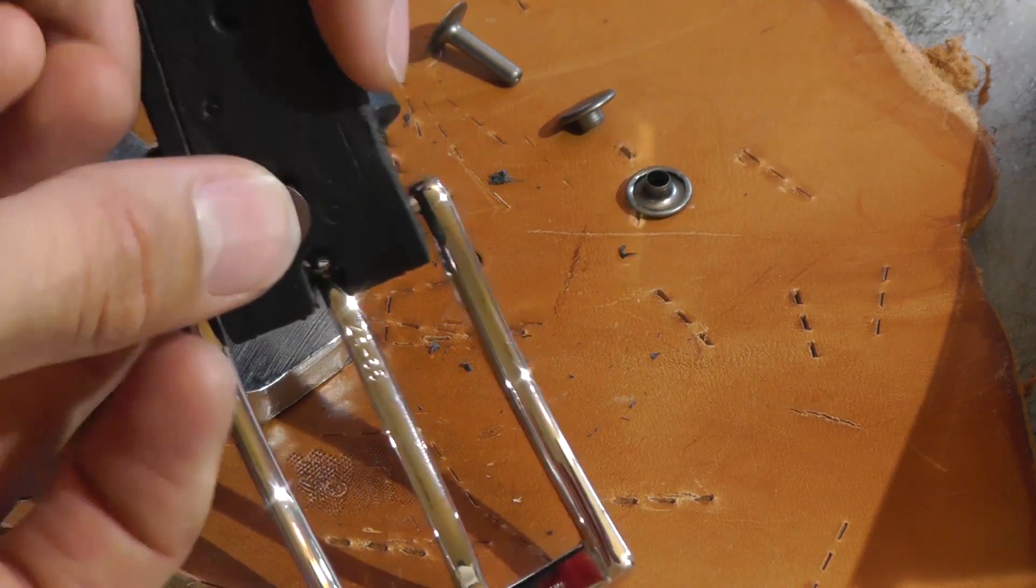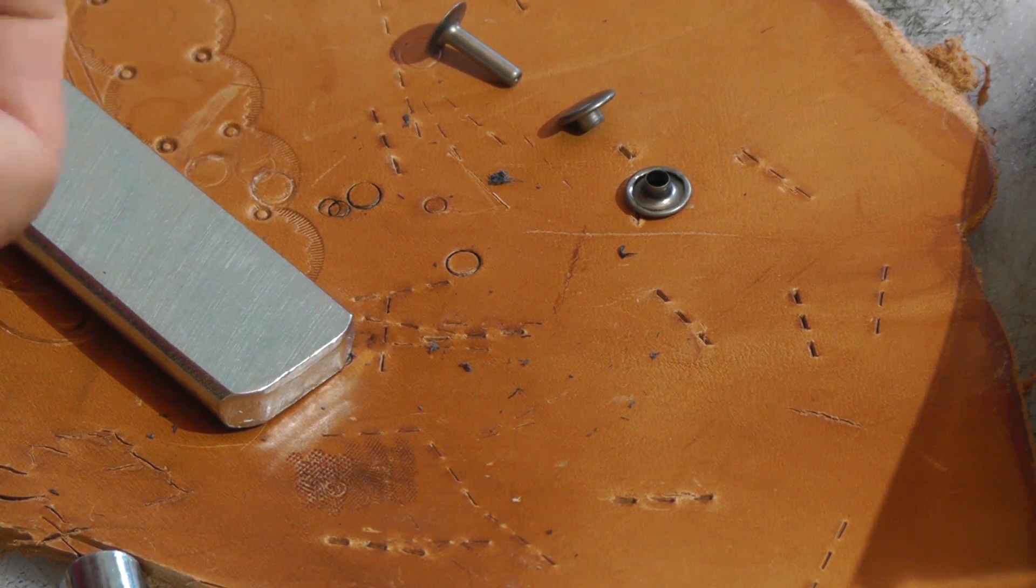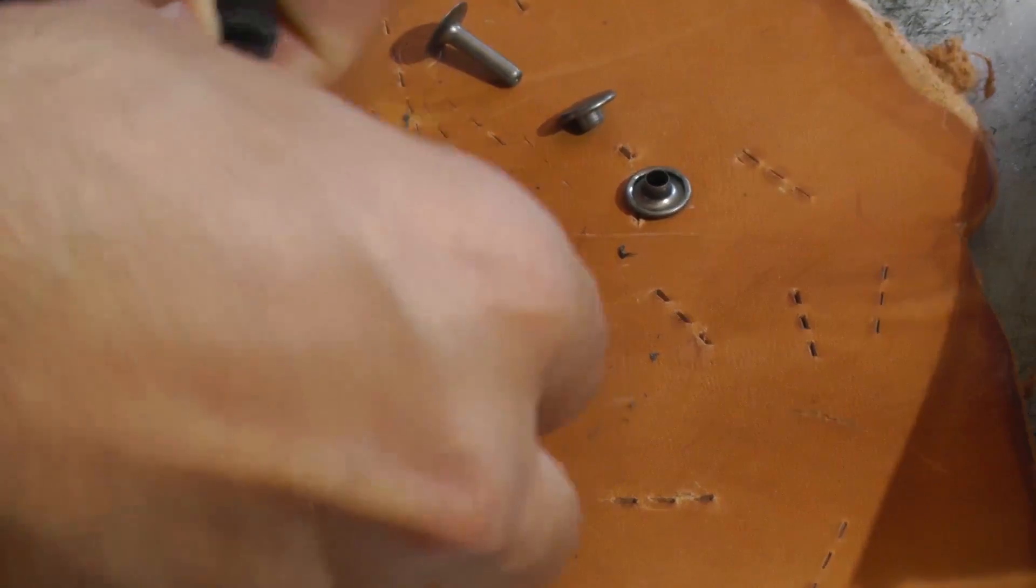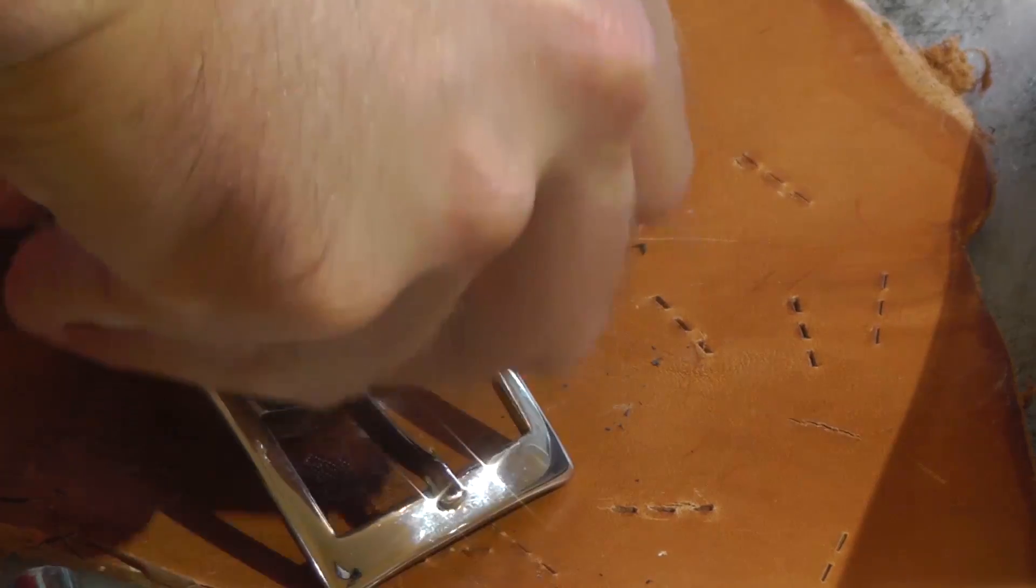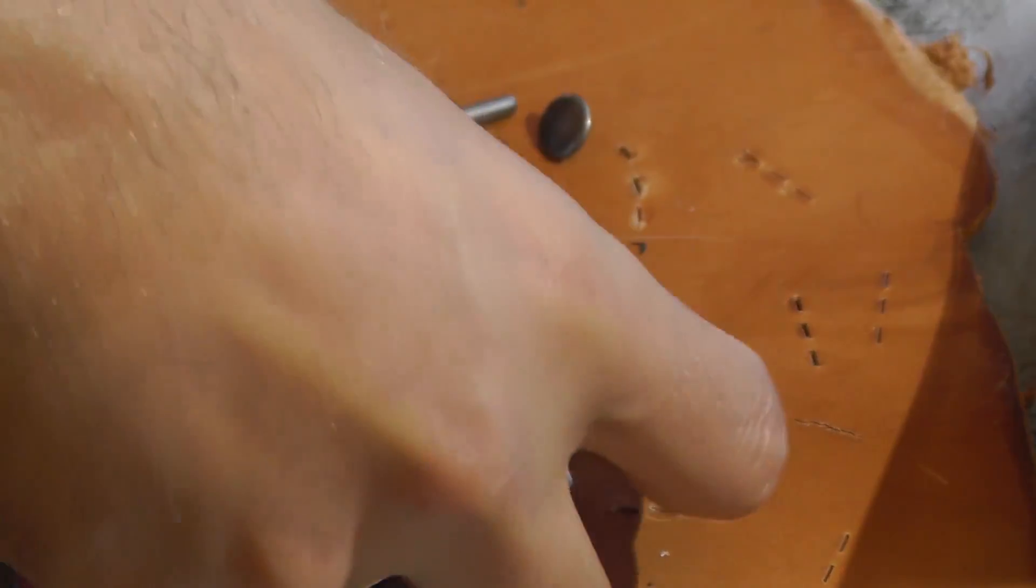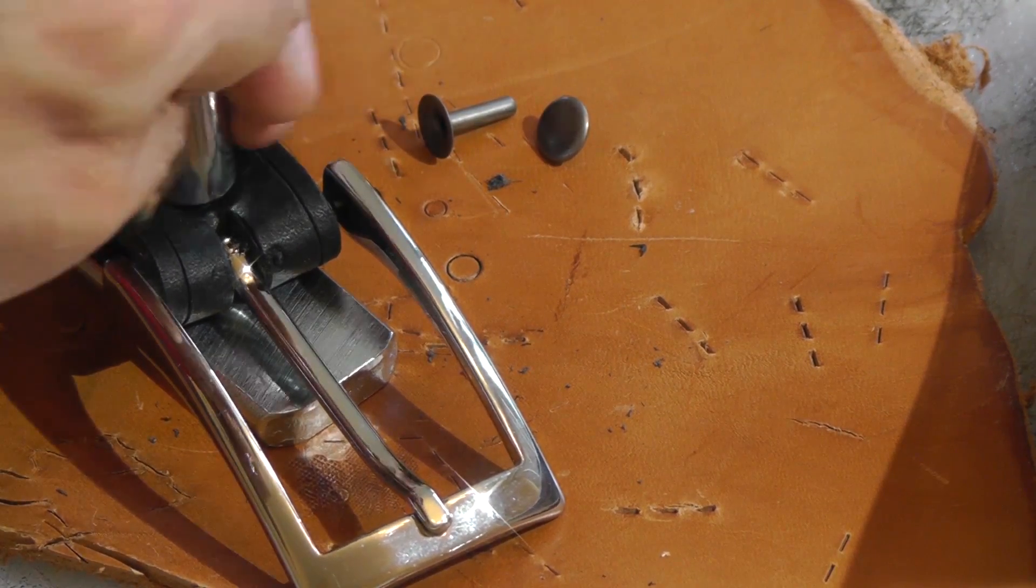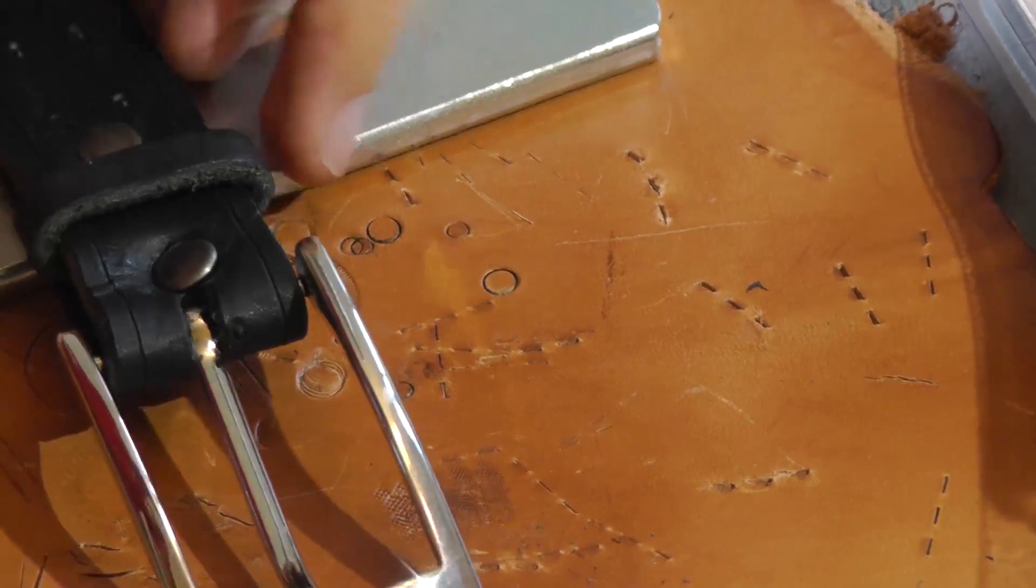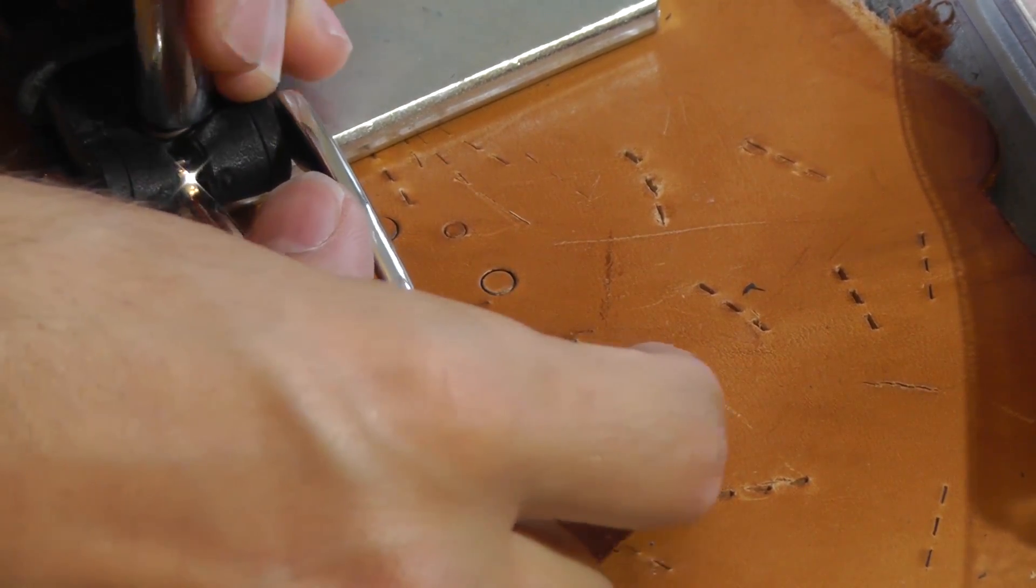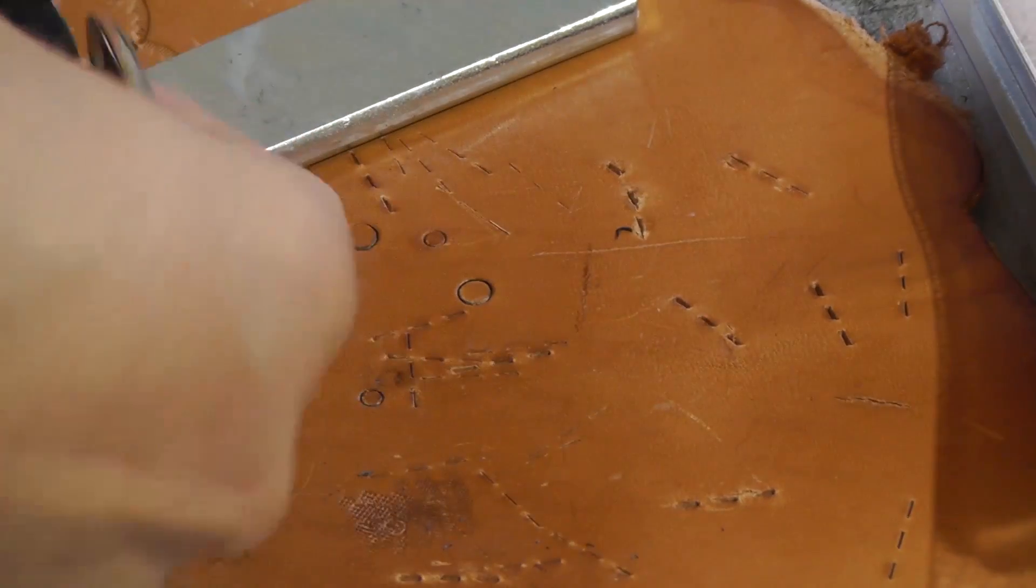I'm going to do this rivet first. So I put it through this hole, feed it through the hole on the other side. And there we go. You can see it coming through. I'm going to lay that flat down on the anvil here. I'm going to push this cap through the hole and onto the rivet there. Holding it down. Take your tool, put it on top of the rivet. Go crazy. Just going to straighten this one out a little bit. There you have it.